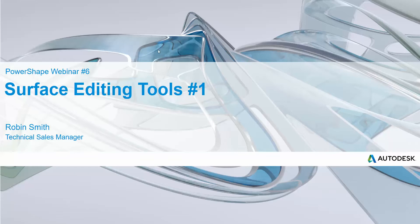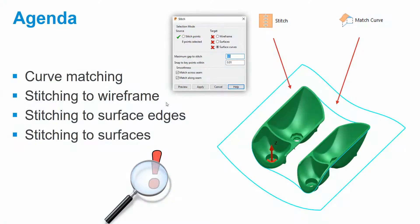So here's a quick agenda. We're going to be looking at specifically the curve matching command - it's a little known command that's tucked away that people may not know about - and then we'll move on to the stitching functionality: the ability to stitch curve edges or internals of curves to other entities, whether that be wireframe, surface curves, or surfaces. That's really the crux of this session, so let's get started.